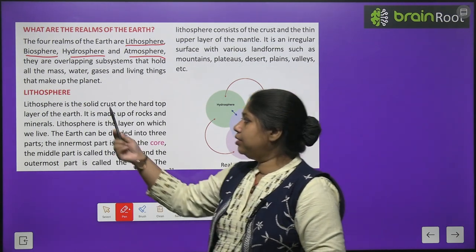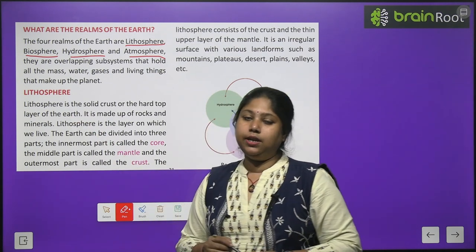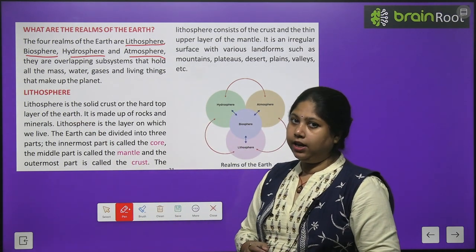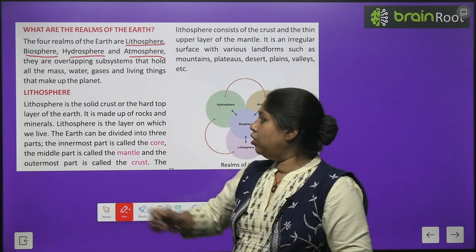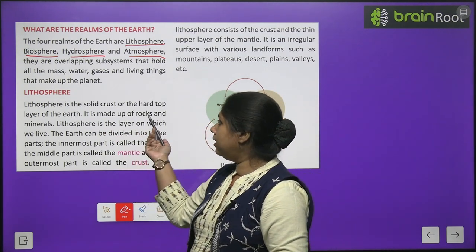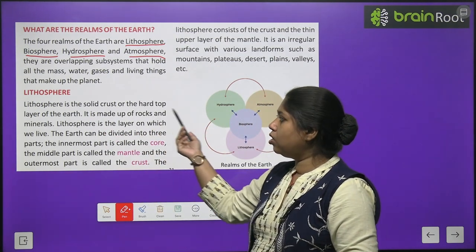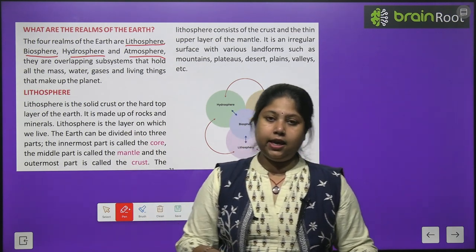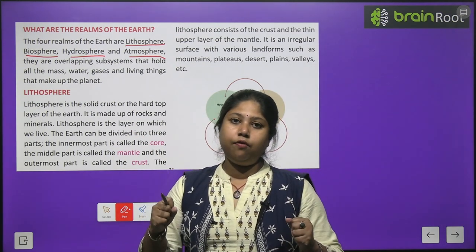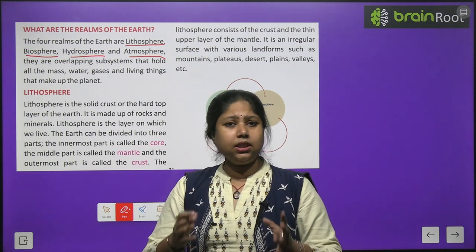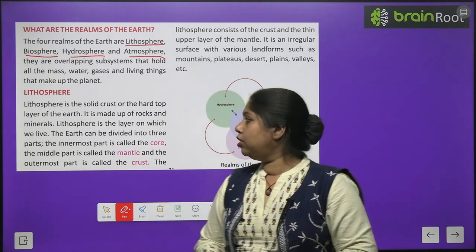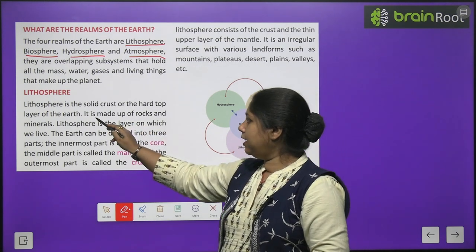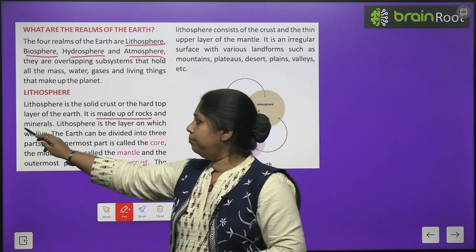First of all, we are going to study about the first realm — the Lithosphere. Lithosphere is the solid crust or the hard top layer of the Earth. The Earth's surface that we see, made of rocks that is tough and hard — this is basically the Lithosphere. It is made up of rocks and minerals.